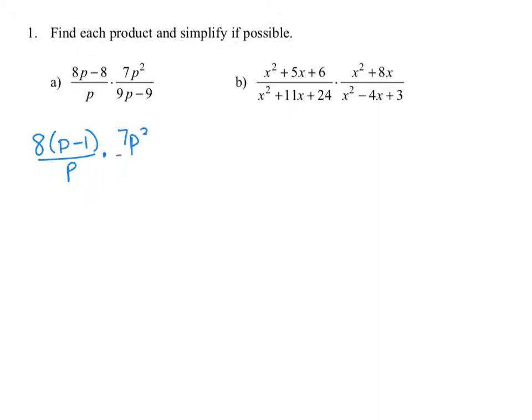In the numerator of the second rational expression, we have 7p squared. In the denominator, you can factor out a 9 and you're left with 9 times the quantity of p minus 1. Now we can divide out any common factors. We see a common factor of p minus 1 in the numerator and a p minus 1 in the denominator. Those you can divide out because it's next to multiplication.